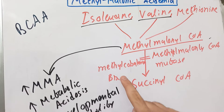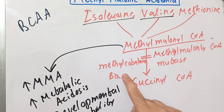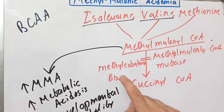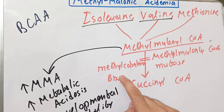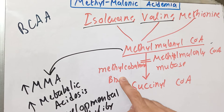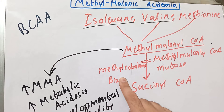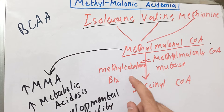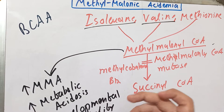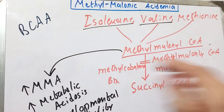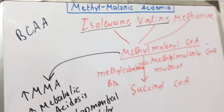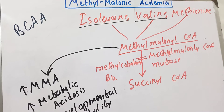The same is the case with deficiency of B12 — whether due to deficiency in the diet, deficiency of the intrinsic factor, gastric ulcer disease, or pernicious anemia. There will be manifestation of methylmalonic acidemia with metabolic acidosis and developmental disability, including peripheral neuropathy.